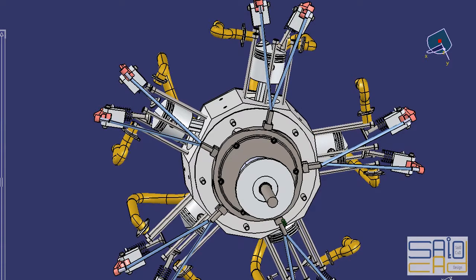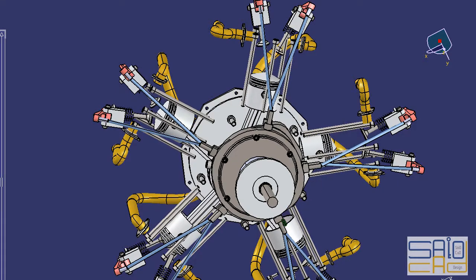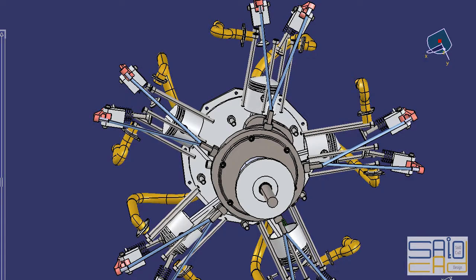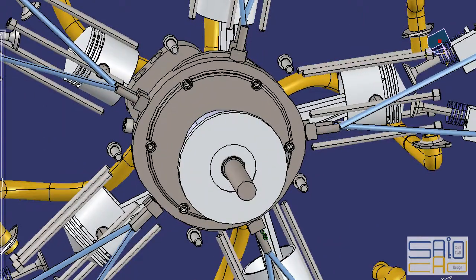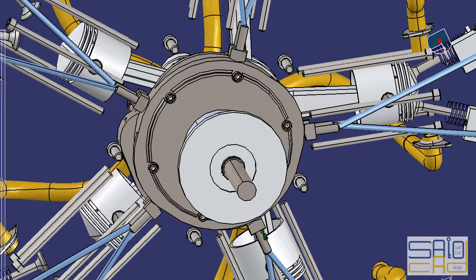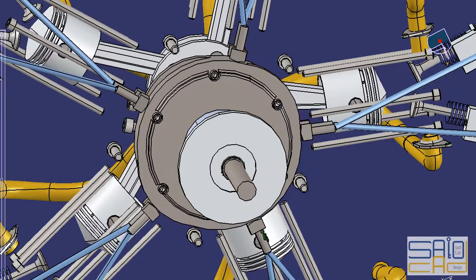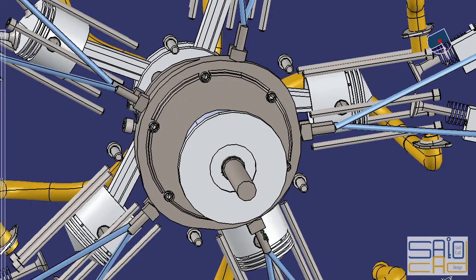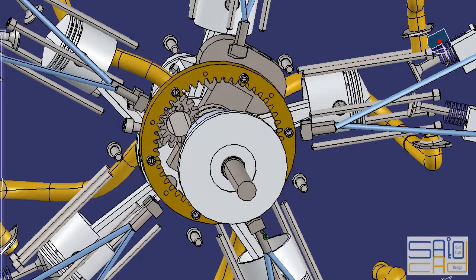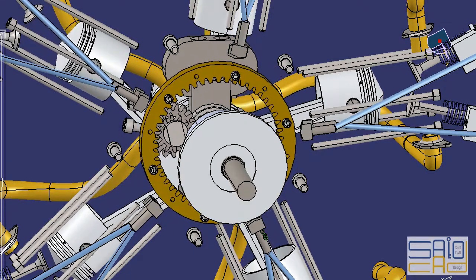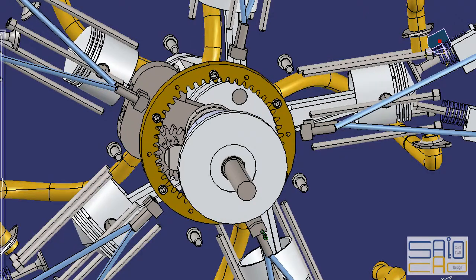Extra rows of radial cylinders can be added in order to increase the capacity of the engine without adding to its diameter. 4-stroke radials have an odd number of cylinders per row, so that a consistent every-other-piston firing order can be maintained, providing smooth operation.